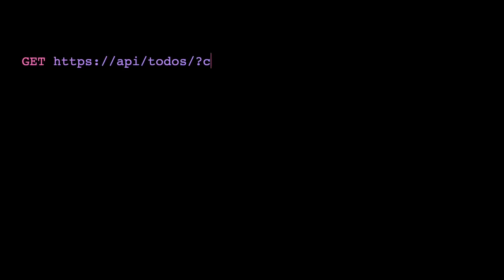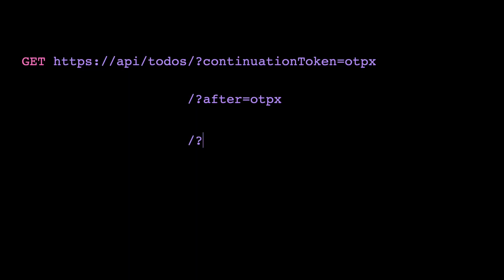Two important notes before we keep going. When naming that parameter on your API, you don't need to call it 'continuation token' — there are several options. For example, you can simply say 'after' and give a code, so 'I'm searching for orders after this code,' or you can use something like 'next.' Also, sometimes you don't want to expose the raw token that comes directly from your database, so it might be useful to build a hash that you return to the client.